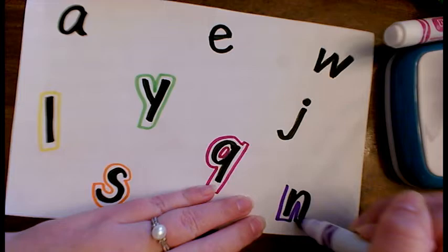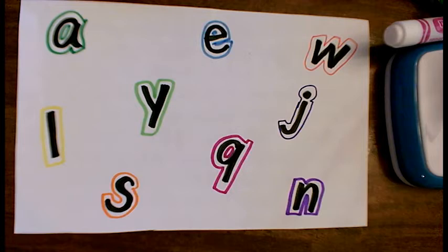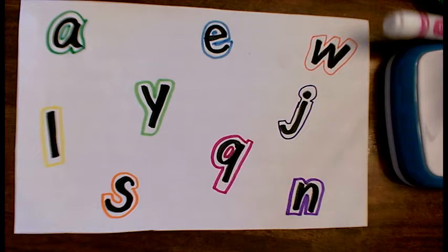Now I have traced around all of my letters one time with one color. As you can see, there is still a lot of space around. So what I am going to do is I am going to come back into these empty spaces and add letters that I haven't used yet. So I don't want to use letters that are already on here. I want to add in different letters that I haven't used yet.